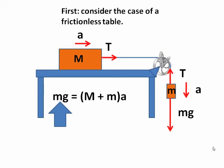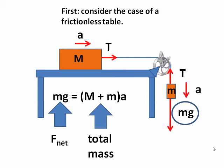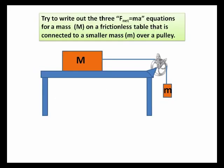Now, the two tensions will cancel each other out. They're only there. That string is a connector connecting the two masses. The net force is mg. And the total mass moving is big M plus little m. And so, F net equals ma is given by that equation.